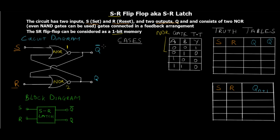We'll go through four different cases of this SR flip-flop. The reason for four cases is that we have two inputs, and the unique combinations are 2 raised to 2, which equals 4 — that is: 0 0, 0 1, 1 0, and 1 1. Each of these we'll consider as a separate case.